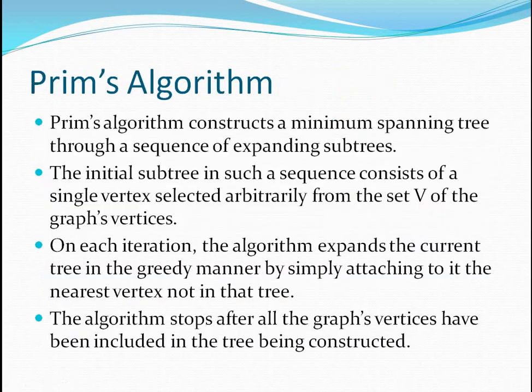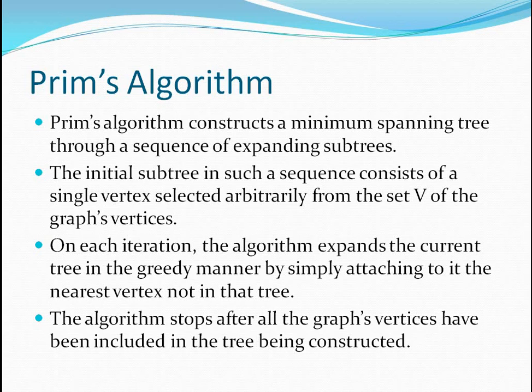Now let us see what Prim's algorithm is. Prim's algorithm aims at constructing a minimum spanning tree through a sequence of expanding subtrees. One vertex is selected arbitrarily and considered as the initial vertex. Then on each iteration, the algorithm expands the current tree by attaching the nearest vertex not already in the existing tree. The algorithm stops once all graph vertices have been included in the tree being constructed.